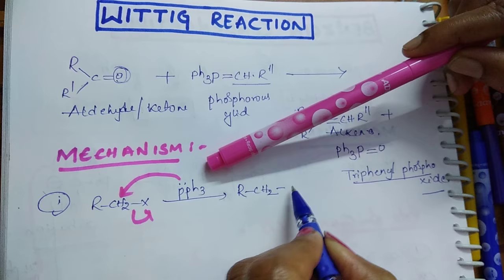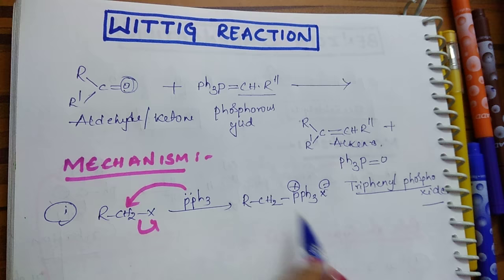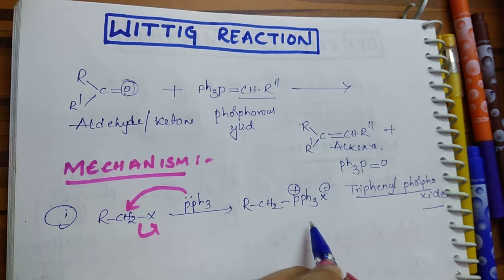...and P-Ph3 plus, and it goes as X minus. Actually, phosphorus, we know that it belongs to 15th group, which can form only three bonds. Here, extra bonds are there, that's why it is getting the positive charge.